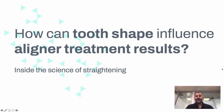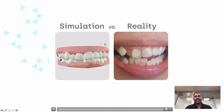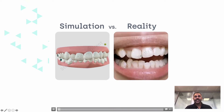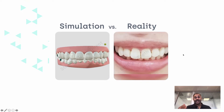Today we're going to be talking about how tooth shape can influence your aligner treatment results. When we want to straighten our teeth, we look at the different stages that happen, where teeth move step by step from their old positions into new positions.